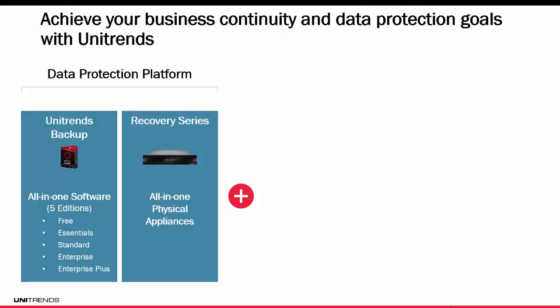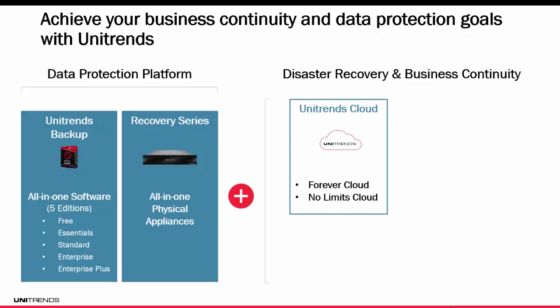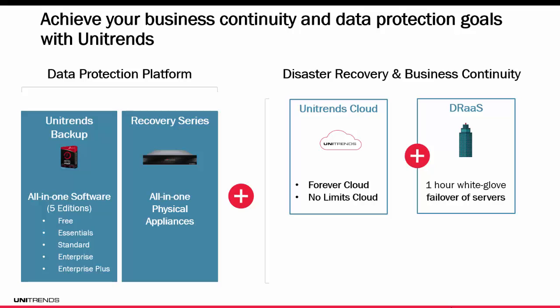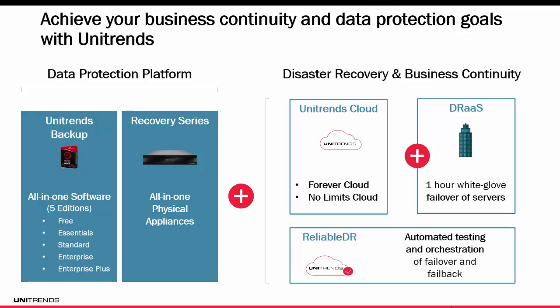From there, you might need more than just data protection, and that's where our disaster recovery and business continuity solutions come into play. The first is the Unitrends cloud, which comes in two flavors: the forever cloud and the no limits cloud, with the ability to add on DR as a service with one-hour white glove failover. In addition, Unitrends has a feature called ReliableDR that can offer automated testing, orchestration, and reporting on your failover and failback of certain servers.